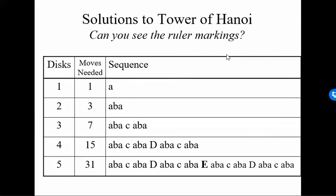So, it turns out that the ruler markings actually provide a solution to the Tower of Hanoi. I think that's kind of amazing.